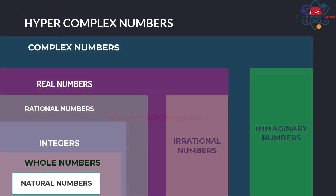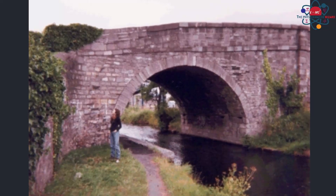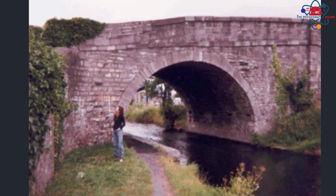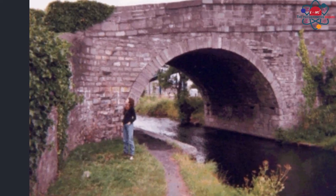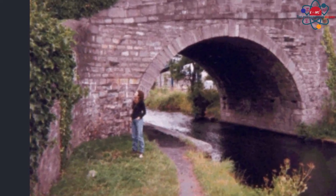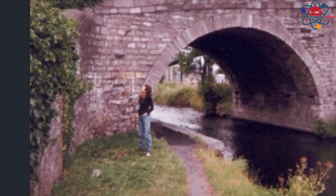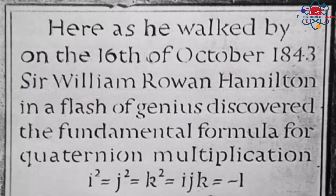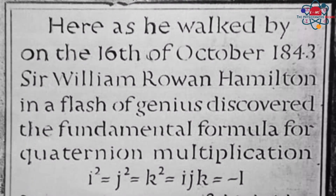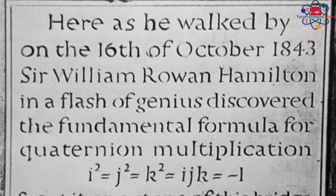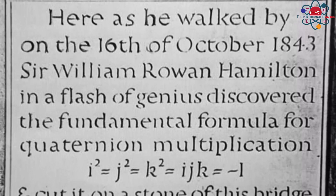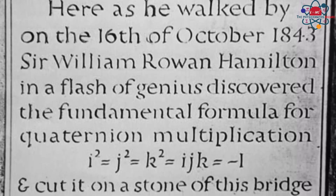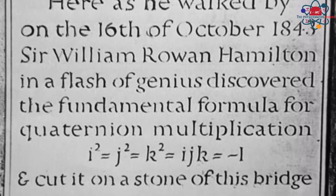Thrilled by his inspiration, history tells us that Hamilton stopped to carve the fundamental equations of this algebra on a stone of a bridge they were passing. There is even a famous inscription to this date that reads: 'Here, as he walked on the 16th of October 1843, Sir William Rowan Hamilton, in a flash of genius, discovered the fundamental formula for Quaternion multiplication.'